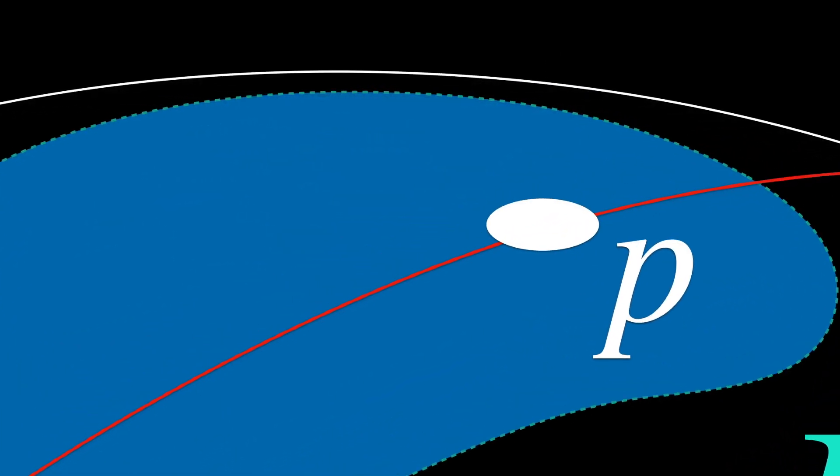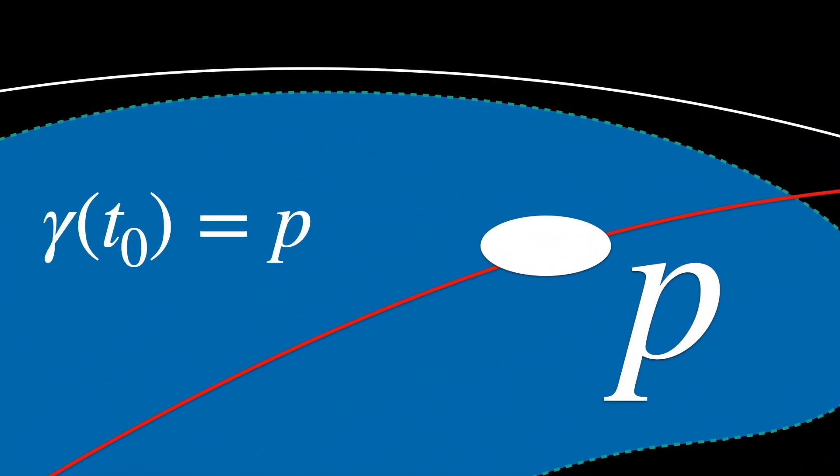For example, gamma of T0 equals P, which means that, at time T0, the curve passes through the point P.